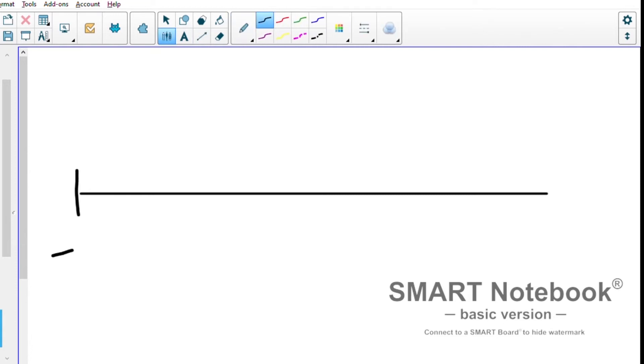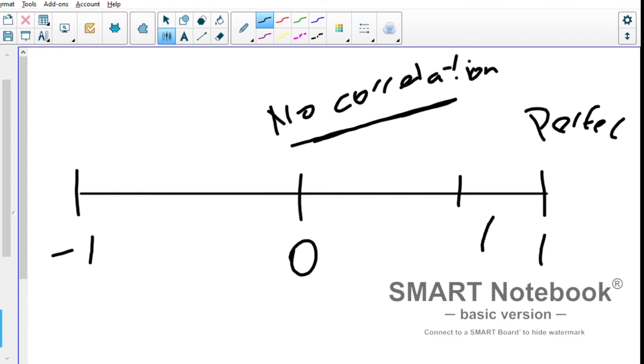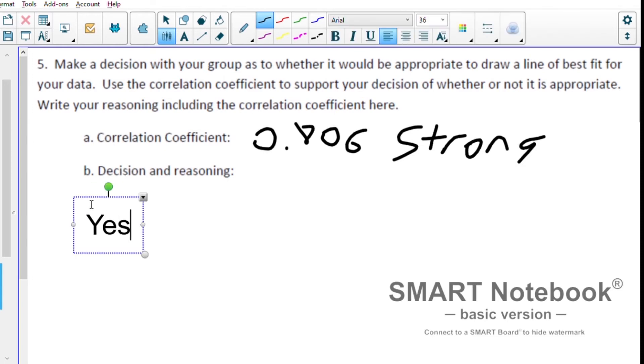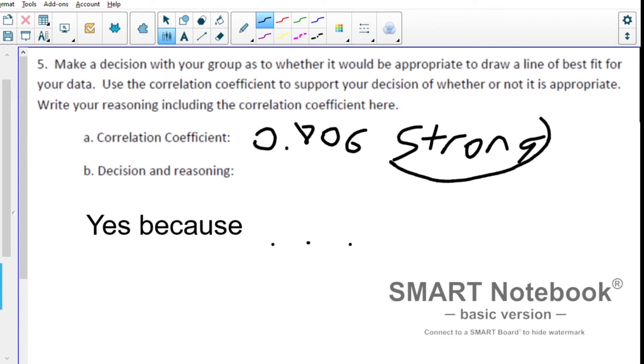From our class discussion, that gave us a strong correlation. This was on our scale from negative one to positive one - we said that at one it was perfect, and then it got weaker until we got around zero where there was no correlation. We said if there's no correlation, then we don't draw a line of best fit. But this category from 0.7 to 1 we called strong, and that meant the data lined up pretty well. So for this question, our decision is yes - this is a strong correlation, so we are going to draw a line of best fit.